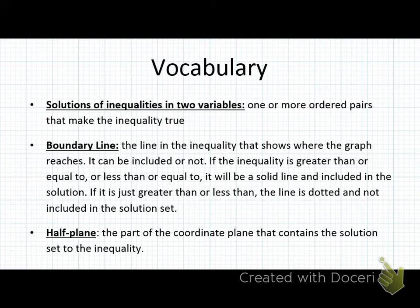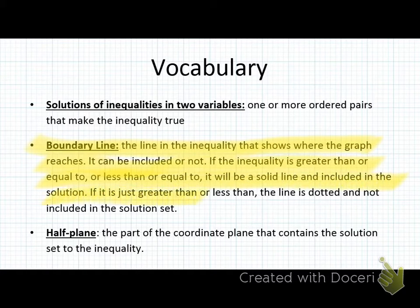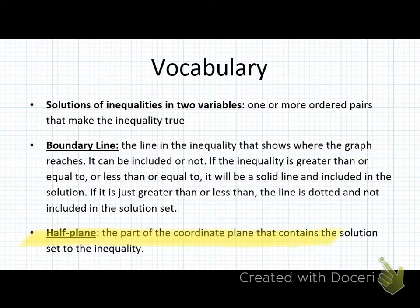Vocabulary. Solutions to inequalities in two variables: one or more ordered pairs that make the inequality true. So we want to make true statements. It's got to make logical sense. Boundary line is the line in the inequality that shows where the graph reaches. It can be included or not. If the inequality is greater than or equal to or less than or equal to it'll be a solid line and included in the solution. If it is just greater than or less than the line is dotted and not included in the solution set. And then the half-plane is the part of the coordinate plane that contains the solution set to inequality. You don't need to write all of this down. I just wanted you to start getting familiar with these. If you want to pause and write this down you can, but I'm not requiring you to.